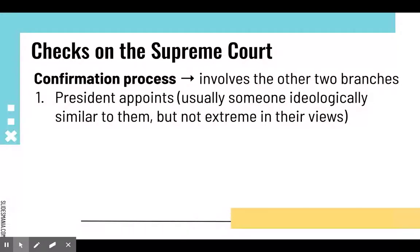The first step is that the president appoints someone to that position. Usually that person is ideologically similar to the president — if the president is liberal, they'll nominate a liberal justice; if conservative, a conservative justice. But the nominee has a better chance of being confirmed if they are not extreme in their views. The president often chooses someone similar to them ideologically, but without extreme views, knowing that extreme views make Senate confirmation less likely.